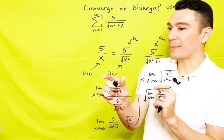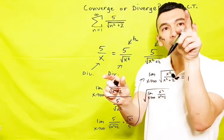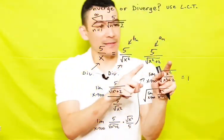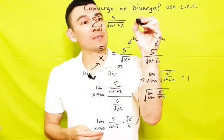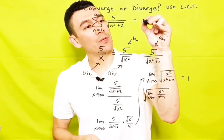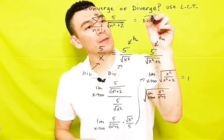Then by the limit comparison test, it is said that A sub n would also diverge. So the overall conclusion to the matter is that the original given series diverges.